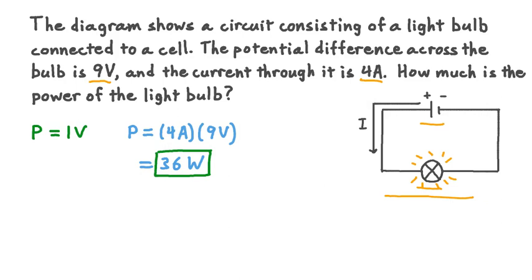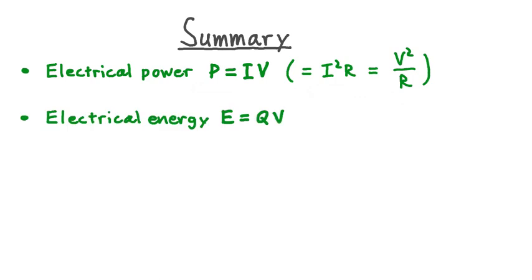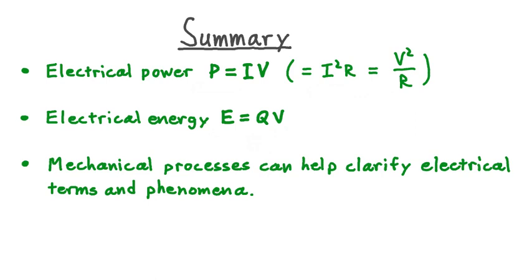Let's summarize what we've learned about the power of electrical components. Electrical power is given by P equals I times V, current times voltage. Thanks to Ohm's Law, there are equivalent ways to write this: I squared times R, or V squared divided by R. These are all equivalent expressions for electrical power. We also saw that electrical energy E is equal to charge multiplied by voltage — specifically, the charge Q that passes a certain point multiplied by the potential difference supplying that circuit. Furthermore, mechanical processes such as lifting a mass can help us understand electrical terms like voltage, electrical potential energy, and power.